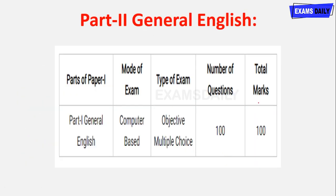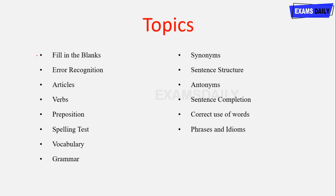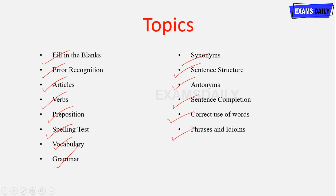Part 2 is General English — computer-based test, objective multiple choice questions, 100 questions for 100 marks, making Paper 1 a total of 200 marks. Topics for General English include fill in the blanks, error recognition, articles, verbs, preposition, spelling test, vocabulary, grammar, synonyms, sentence structure, antonyms, sentence completion, correct use of words, idioms and phrases. It is basic-level English and Hindi tested in Paper 1.